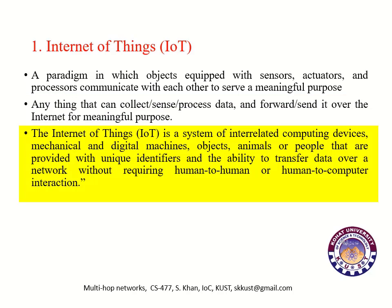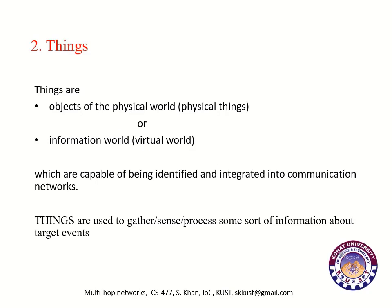Basically, Internet of Things is a system of interrelated computing devices, mechanical and digital machines, objects, animals or people that are provided with unique identifiers and the ability to transfer data over a network without requiring human-to-human or human-to-computer interaction. In this concept, different electronic objects are used to communicate with each other to solve some sort of problem.